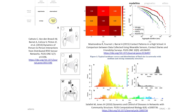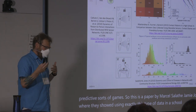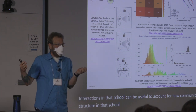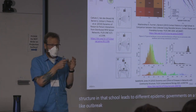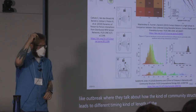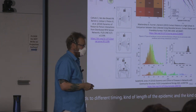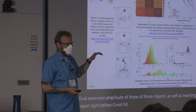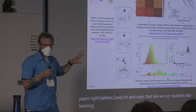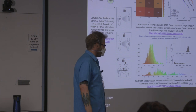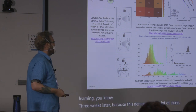These types of data often get used for model calibration and predictive aims. A paper by Marcel Salathé and Jamie Jones uses exactly this type of data in a school — the interactions in that school can account for how community structure leads to different epidemic outcomes on a flu-like outbreak, showing how community structure affects both timing, length of the epidemic, and final amplitude. Ironically I was teaching this paper right before COVID hit, and my students were learning things the general public was learning three weeks later.